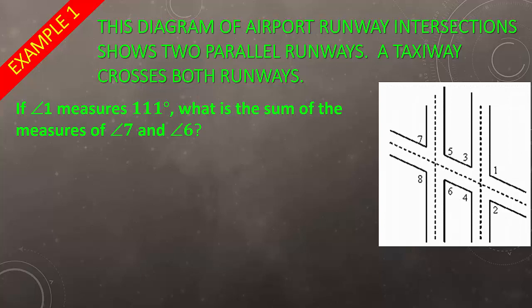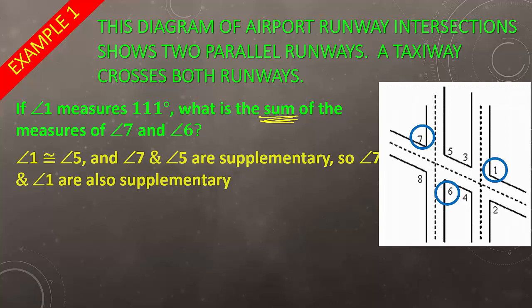The runway diagram shows two parallel runways, and the taxiway crosses both runways. Angle 1, right there, measures 111 degrees, so we want to find the sum of the measures of angles 7 and 6. This is important — we need the sum, so once we find what angles 7 and 6 are, we need to add them up together. First things first, angle 1 is congruent to angle 5.